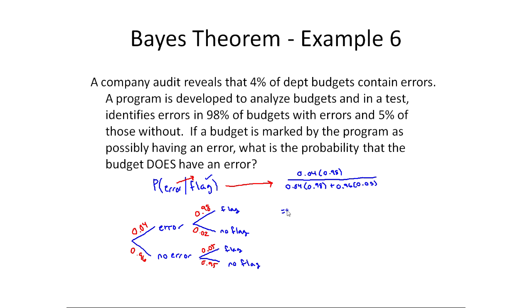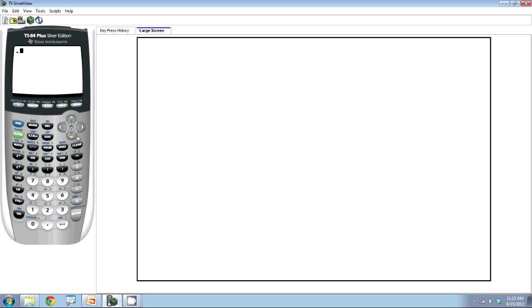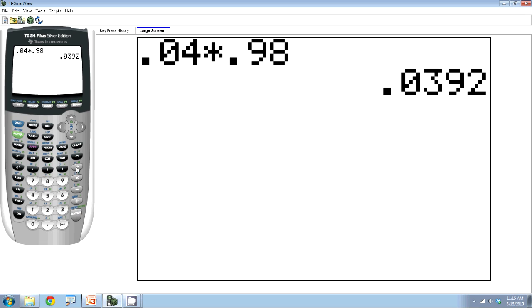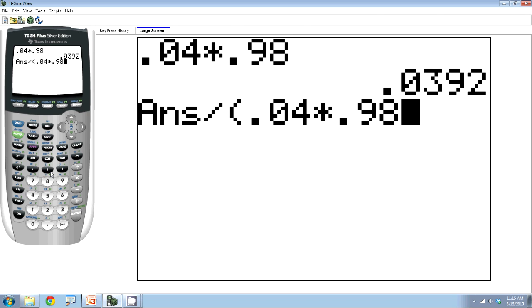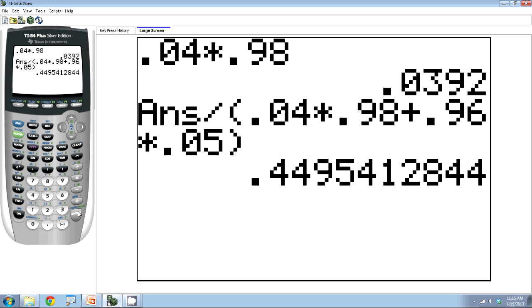Well, now I've got to calculate this out. And so I'm going to use the calculator for this. So we've got 0.04 times 0.98 divided by 0.04 times 0.98 plus 0.96 times 0.05. And that comes out to 0.45 approximately, so approximately a 45% chance.